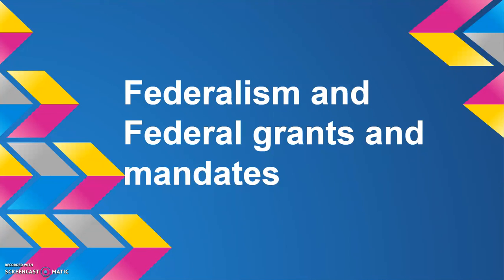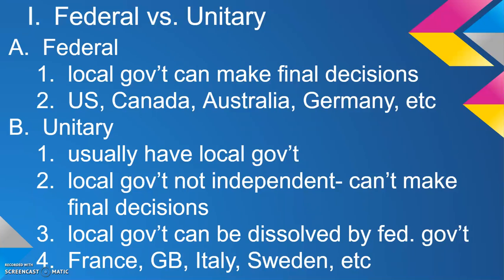We're looking at federalism and the idea of federal grants and mandates. Let's look at the difference between a federal government and a unitary government. A federal government, like what we have in the U.S., Canada, Australia, and Germany, allows local governments to make final decisions within their purview — for example, school board votes or budget votes. A unitary government does have local governments, but they can't make final decisions independently — examples include France, Great Britain, Sweden, and Italy.